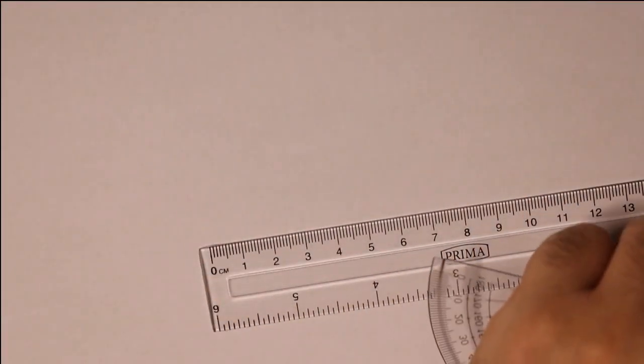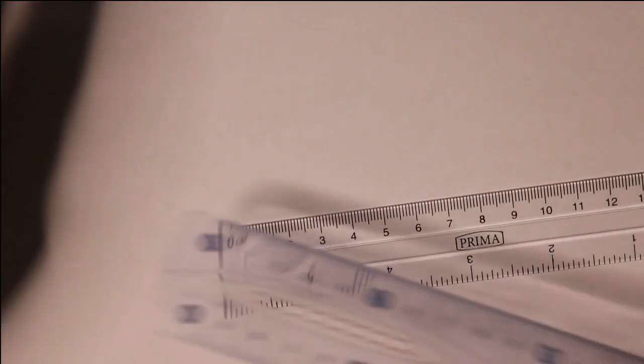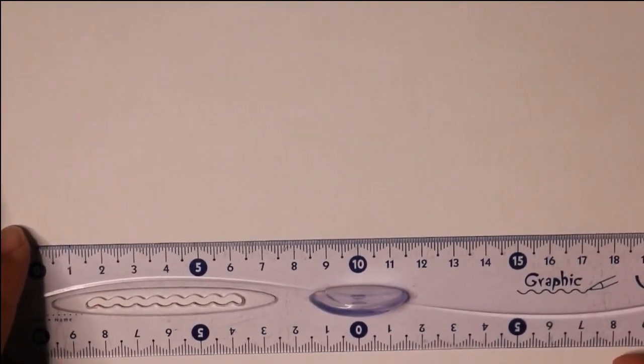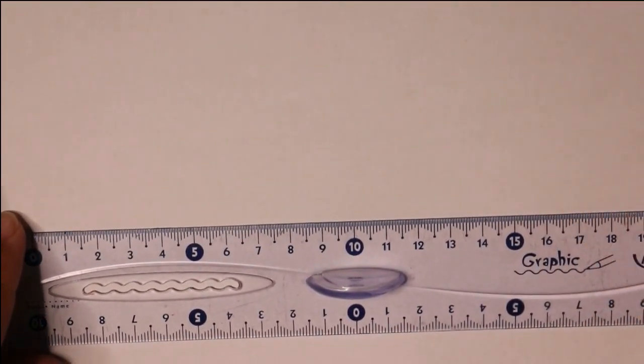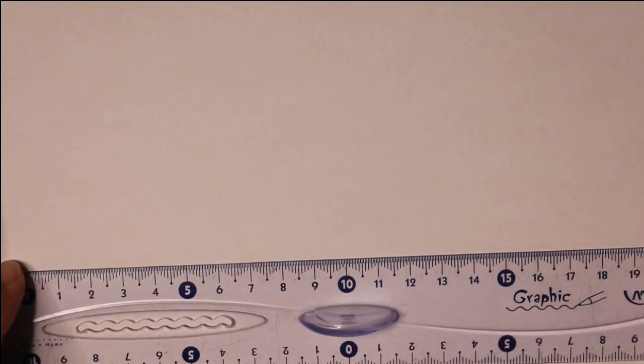The first thing you must do is identify your X axis in your graph. Take a ruler and draw an X axis on a piece of paper.